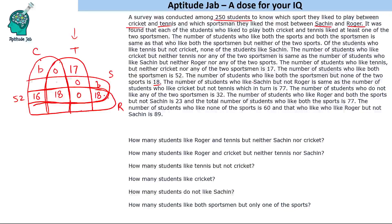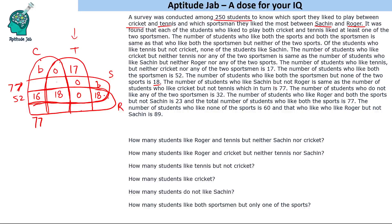The number of students who like Sachin but not Roger equals the number who like cricket but not tennis, which is 77. So 77 people like Sachin but not Roger, and similarly 77 people like cricket but not tennis. The cricket-not-tennis side can still include Sachin or Roger.